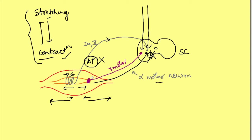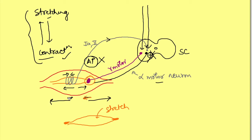With excitation of the gamma motor neuron, the contractile ends of the intrafusal fiber contract, pulling the center — so the center stretches. With excitation of the alpha motor neuron the extrafusal fibers contract and shorten, but due to simultaneous activation of the gamma motor neuron the intrafusal fibers stretch. Normally with passive shortening the intrafusal fibers would also shorten, but gamma activation keeps the intrafusal fiber stretched, maintaining the stretch signal during voluntary contraction.